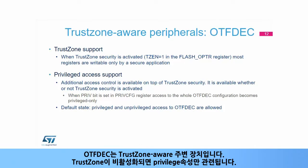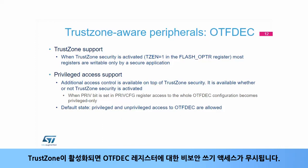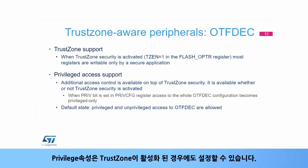The OTF-DEC is a TrustZone-aware peripheral. When TrustZone is disabled, only the Privileged attribute is relevant. By setting the Priv bit in the Privileged configuration register (PrivCFGR), unprivileged reads return 0 and unprivileged writes are ignored. When TrustZone is enabled, non-secure write accesses to OTF-DEC registers are discarded, and OTF-DEC regions can only be programmed by secure applications. The Privileged attribute can also be set when TrustZone is enabled.